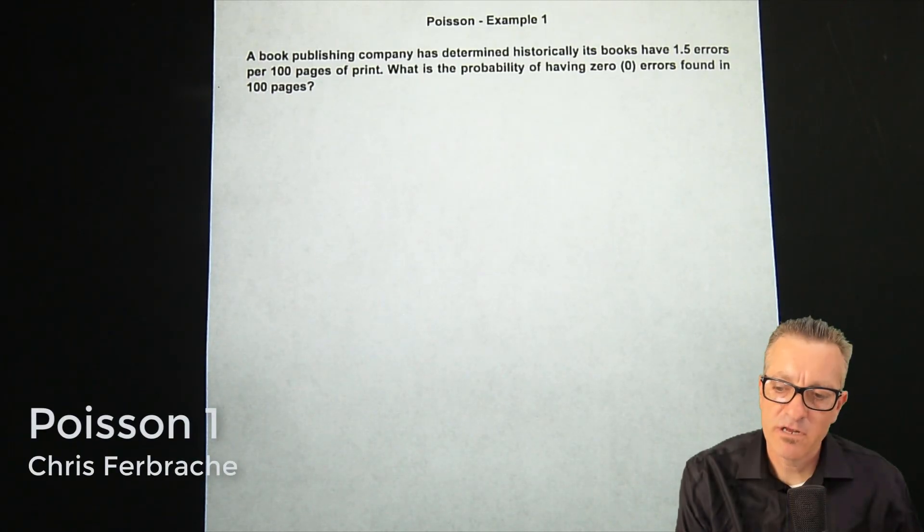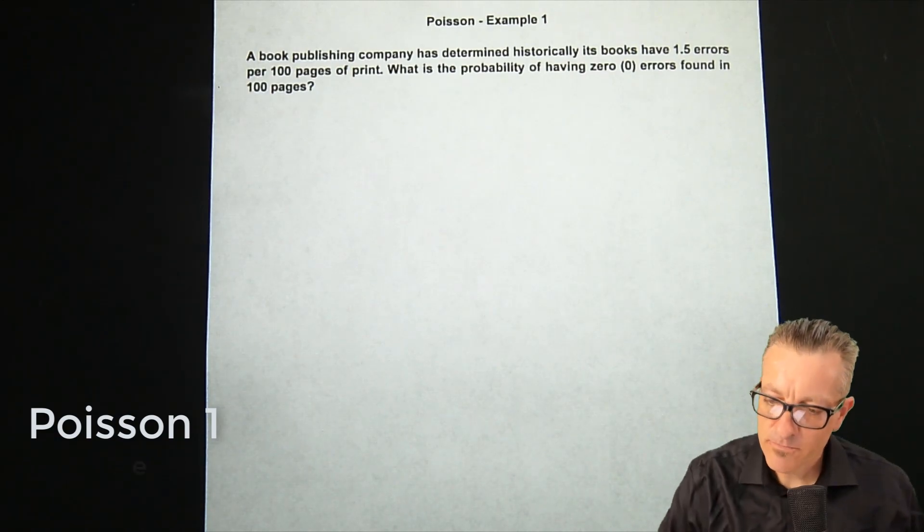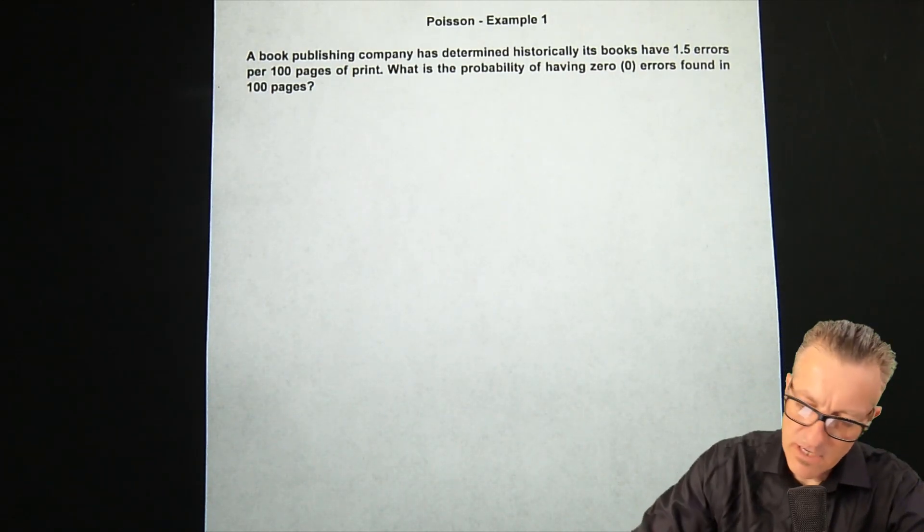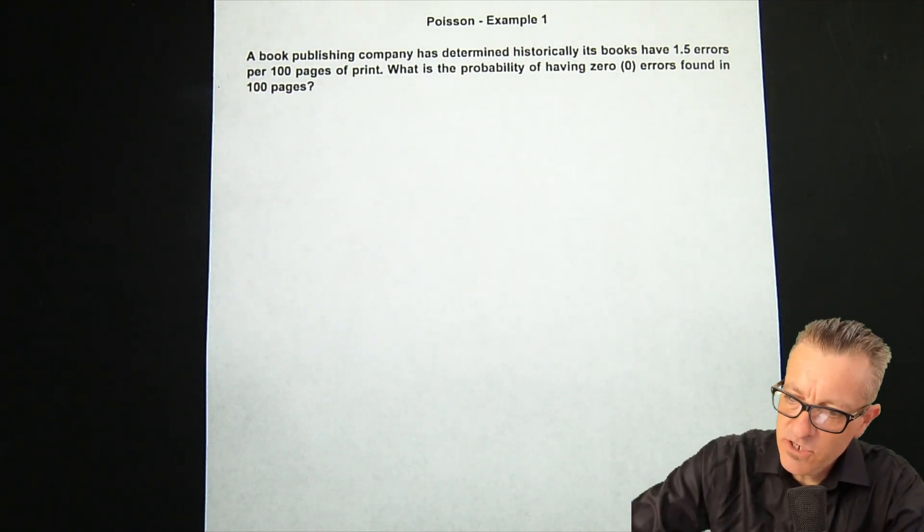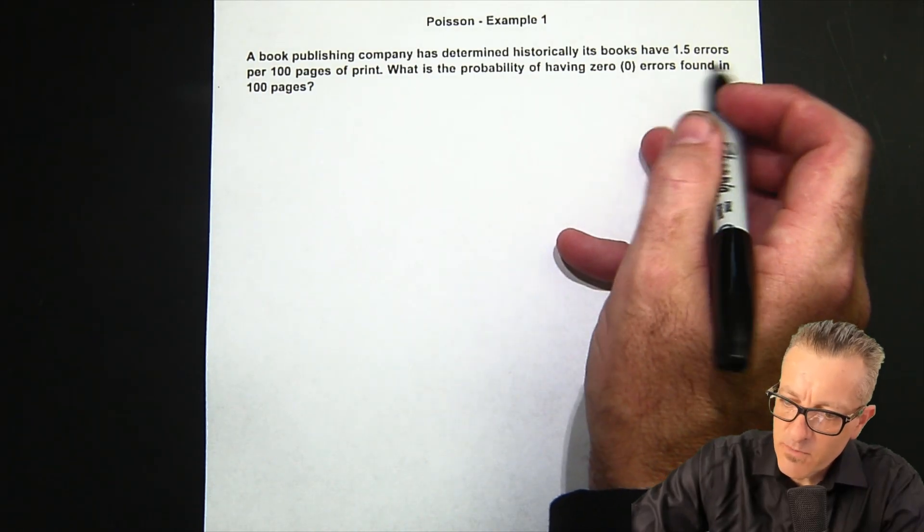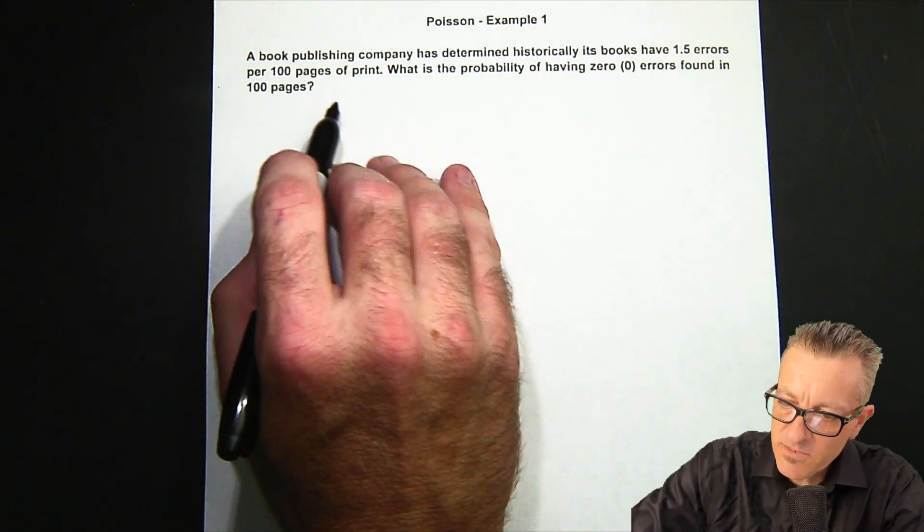Hi, this is Christopher Boucher and I'm going to review a Poisson distribution example. A book publishing company has determined historically its books have 1.5 errors per 100 pages of print. What is the probability of having zero errors found in 100 pages?